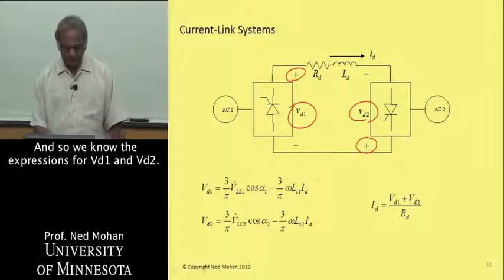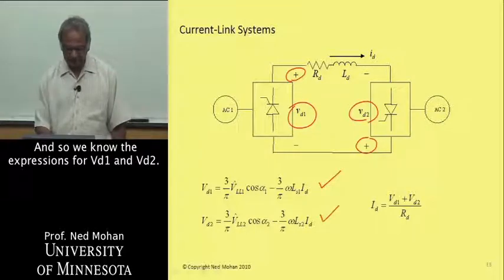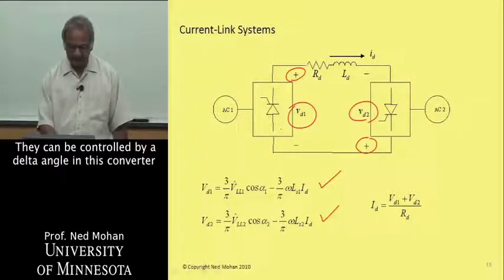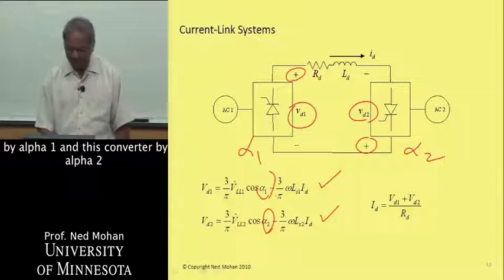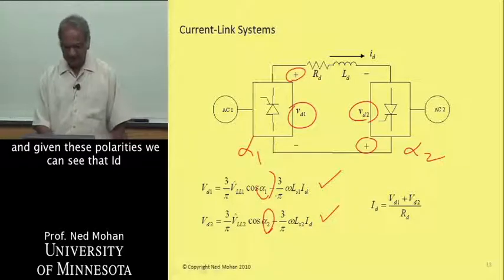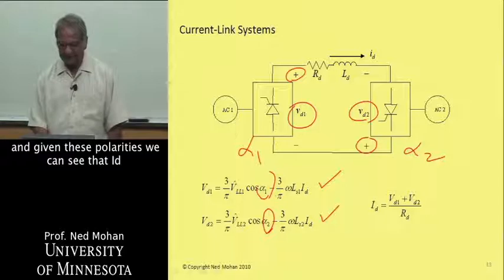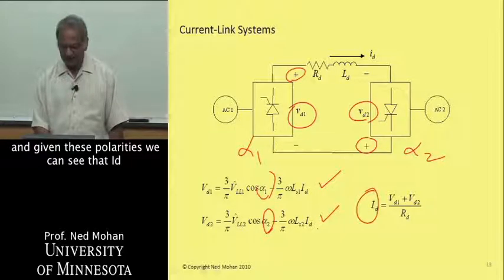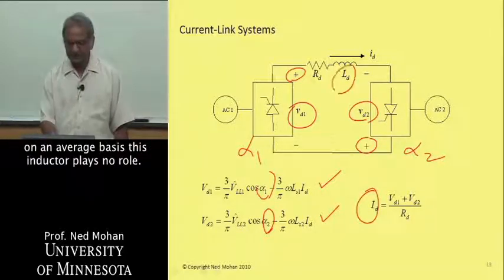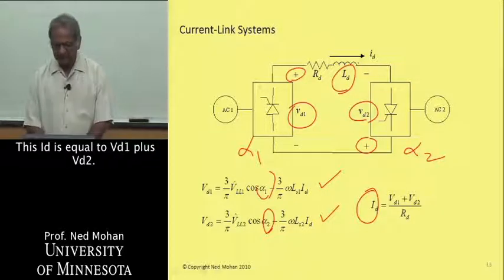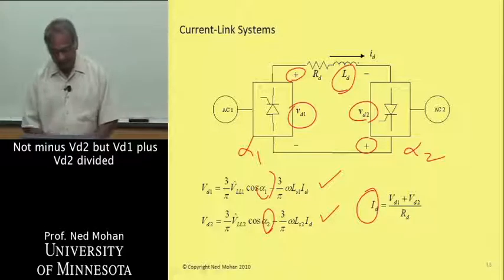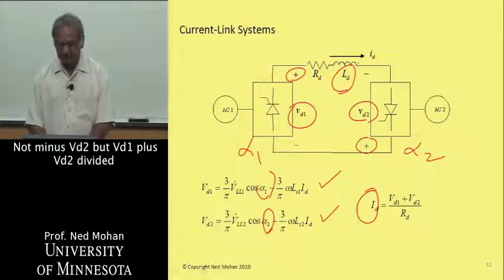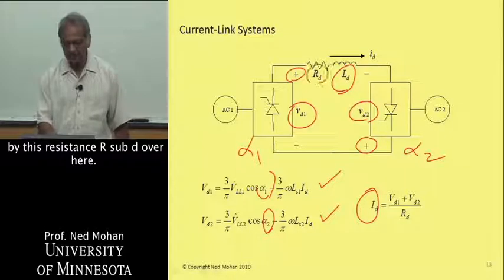We know the expressions for VD1 and VD2, they can be controlled by a delay angle in this converter by alpha 1 and this converter by alpha 2. Given these polarities, we can see that ID, on an average basis, this inductor plays no role. This ID is equal to VD1 plus VD2 divided by this resistance R sub D over here.